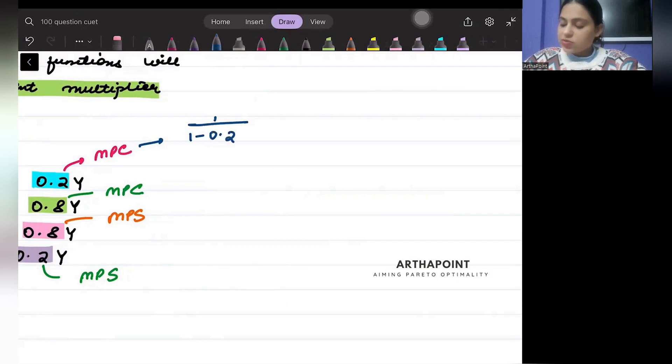So if I have to find the multiplier from here, what will be the multiplier? 1/(1 - 0.2) = 1/0.8 = 10/8, that is 5/4.